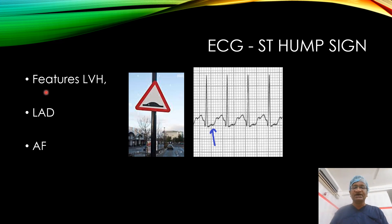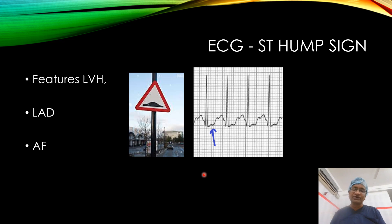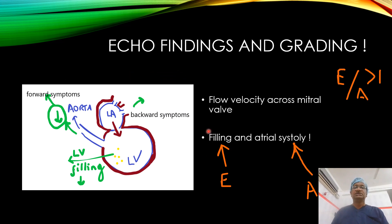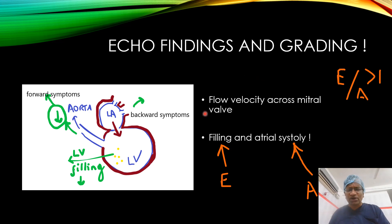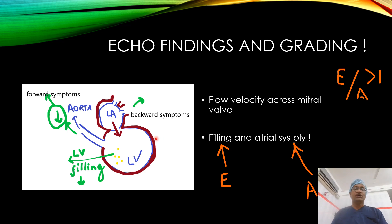On ECG, there may be a hump sign in the ST segment, LA dilatation, and atrial fibrillation - these are classical ECG signs of diastolic dysfunction. Now looking at echo findings and grading: we concentrate on flow velocity across the mitral valve, because this indirectly tells us the LV function in diastole - how stiff it is and how well it fills.